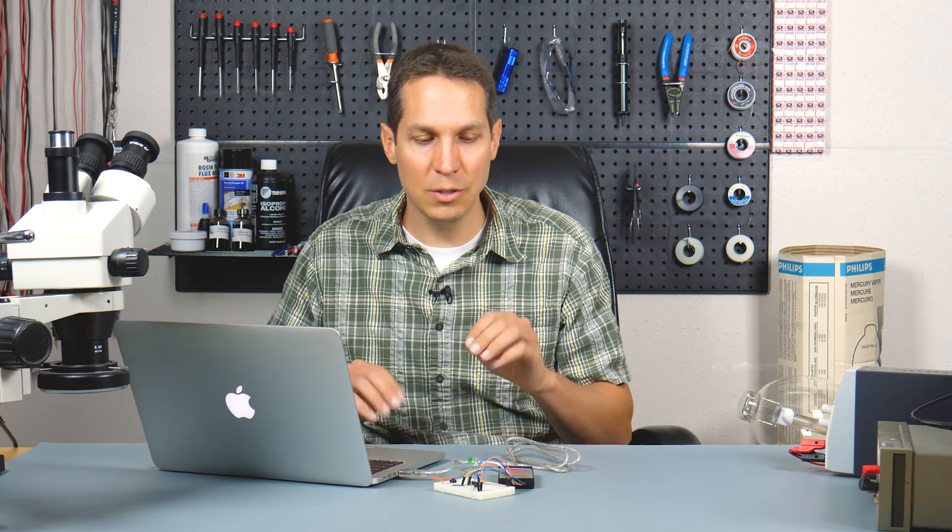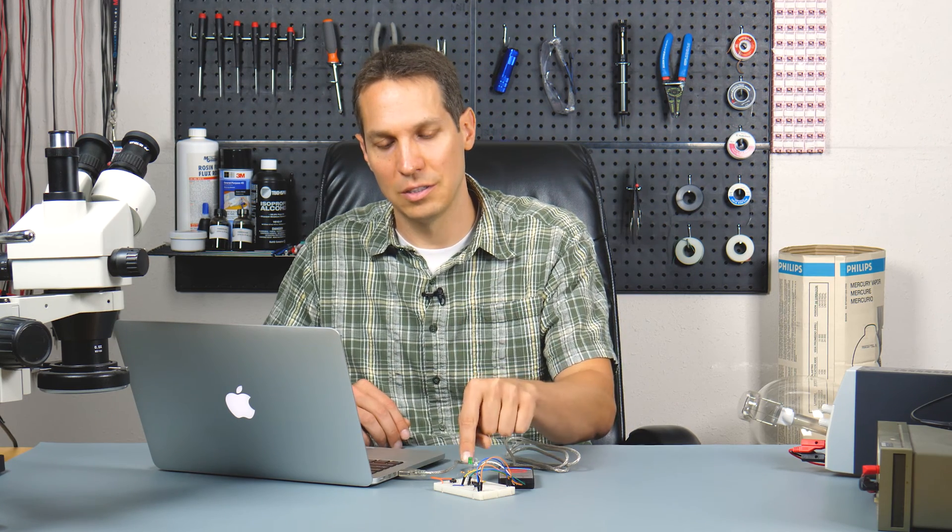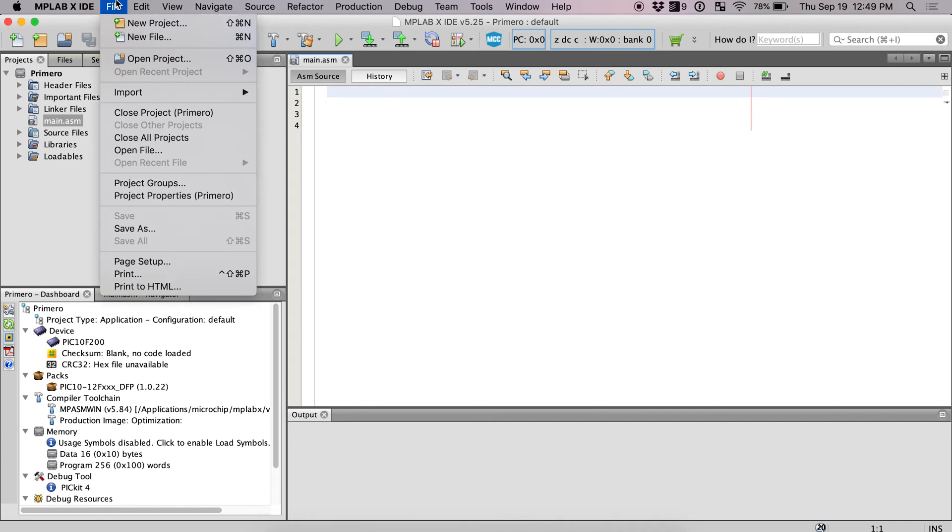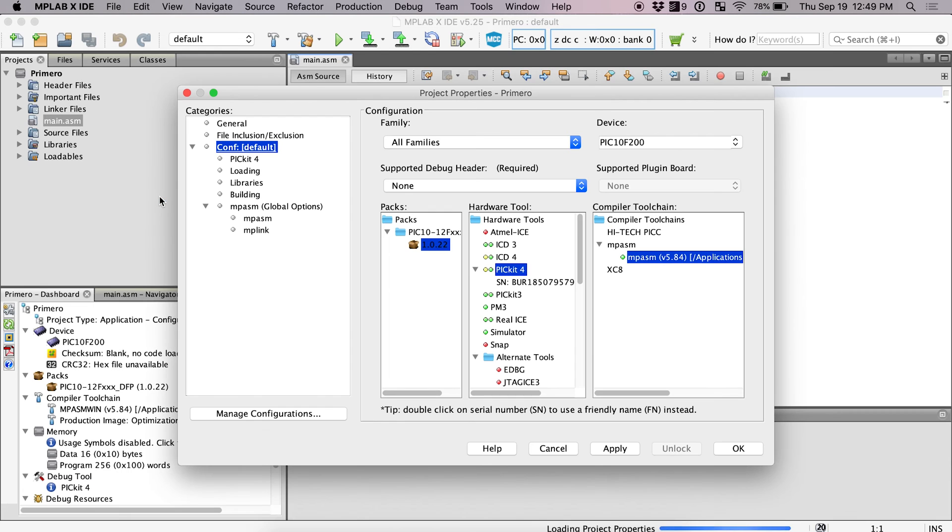So now we've got the project set up, we've got our main file set up. Now we just need to make it so our circuit itself is being powered by the Picket 4. So we're going to start right here. And to get power, we're going to go up to File, Project Properties, Primero, and it's going to pop up.